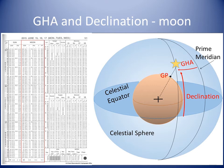The Nautical Almanac tells us the declination — that is the angle from the celestial equator to the celestial body on the celestial sphere. The angle is given relative to its position north or south of the celestial equator. Here we see the section of the Nautical Almanac showing GHA and declination of the Moon for every hour of three days. We have to interpolate between the hours to find the increments for minutes.